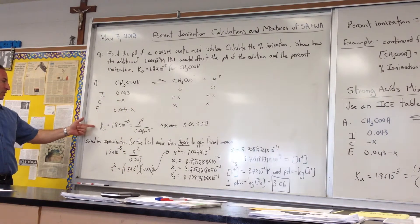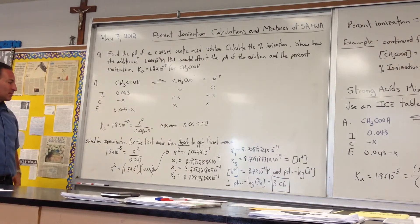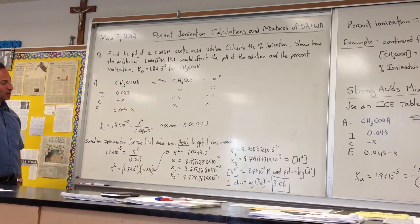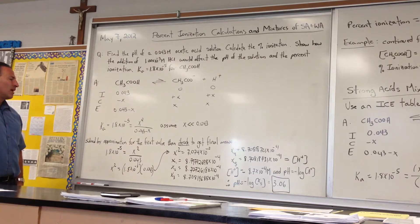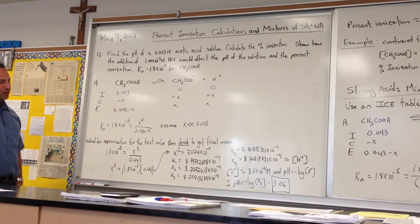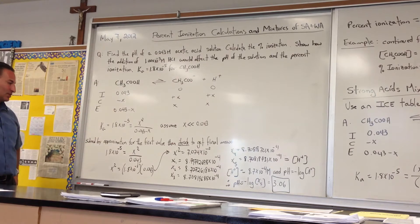So we can set up our equilibrium situation. Ka equals 1.8×10⁻⁵, X² over 0.043 minus X. I start the calculation by assuming that the value of X is much smaller than 0.043. Whether or not that's completely true isn't really relevant if we're using the iterative method, because it will still converge to the final answer.